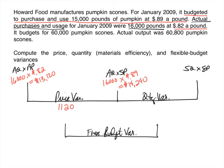Variances don't carry a negative sign — they are always positive numbers, but labeled either favorable or unfavorable. To determine which, focus only on the equations. The only difference between pegs one and two is price. We actually paid 82 cents versus the expected 89 cents per pound — 7 cents less than expected. Paying less than expected is a good thing, so this is a favorable variance.